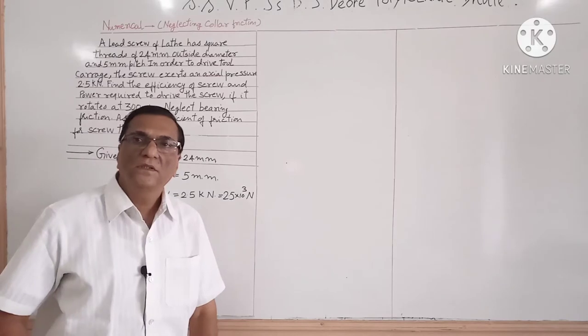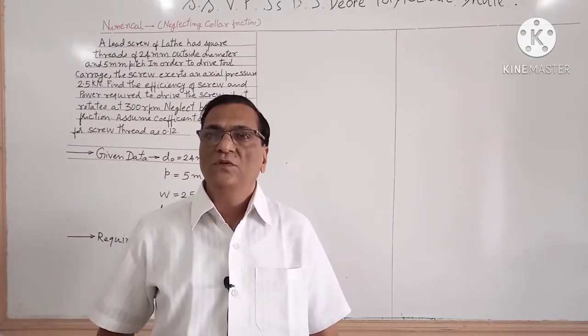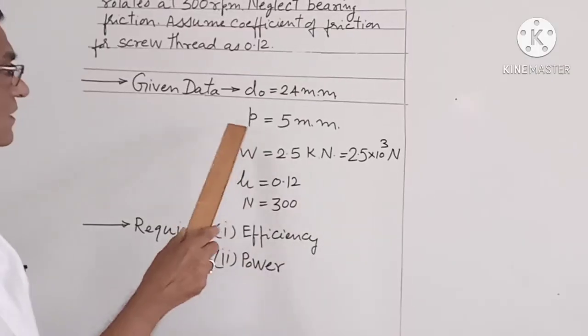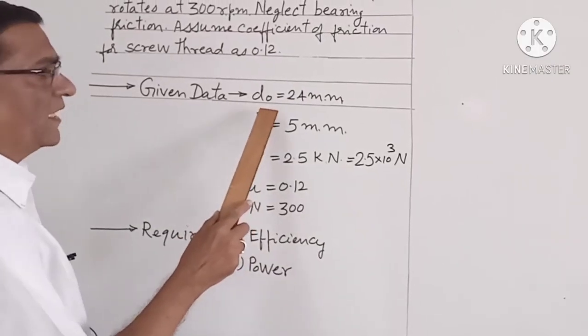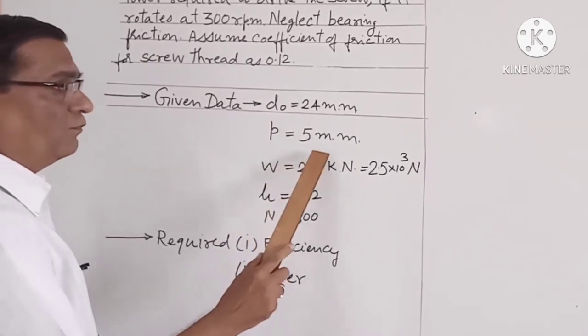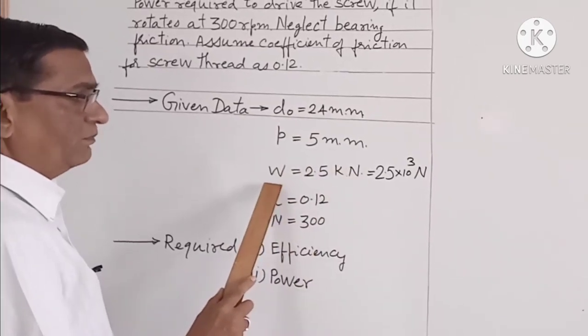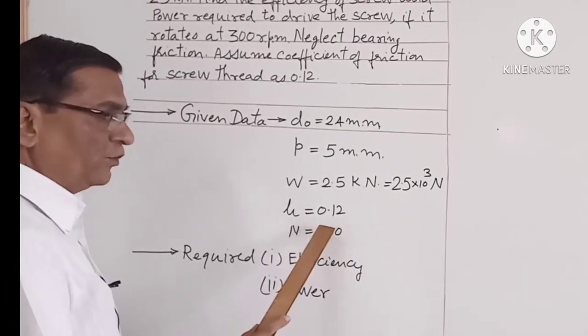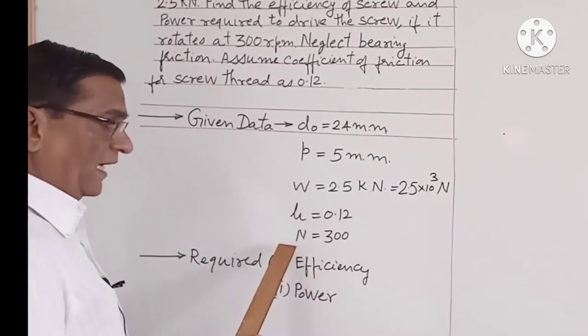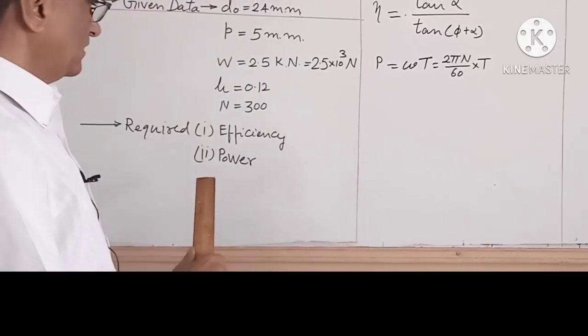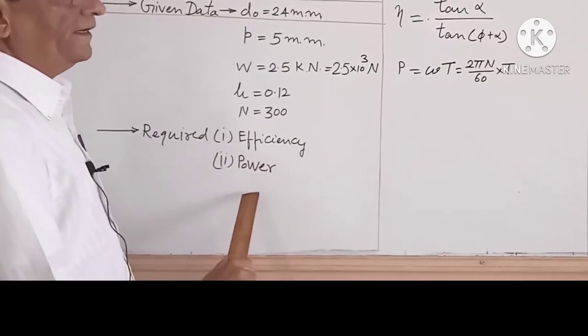Now first of all we will write down the given data. Outside diameter DO is equal to 24 mm, pitch is equal to 5 mm, load W is equal to 2.5 x 10³ N, mu is equal to 0.12, and N is equal to 300. Required data: the efficiency and power.